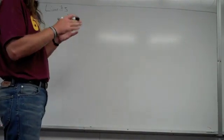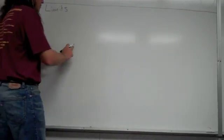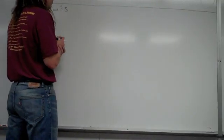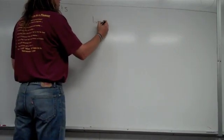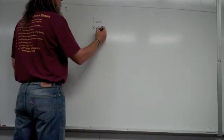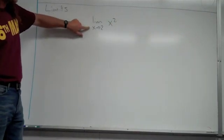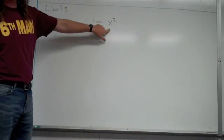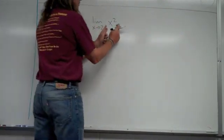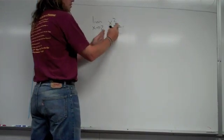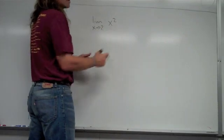There are certain types of limit problems we generally look at. Just to make the notation clear so you can see what's going on, let's say we have the limit as x approaches 2 of x squared. This is read: the limit as x approaches 2 of x squared. As the x value approaches 2, what is the y value approaching?